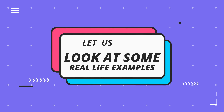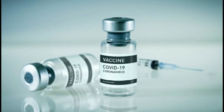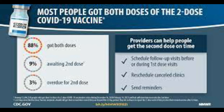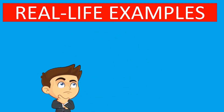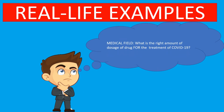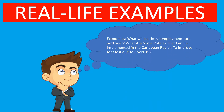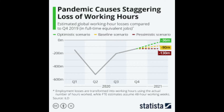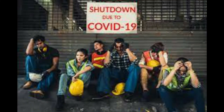Now let's give you some examples. In the medical field, many persons are concerned with what is the right dosage needed for treatment of COVID-19. There's a lot of planning that goes into coming up with two or three dosages — that's statistics right there. In economics, what will the unemployment rate be next year? What policies can be implemented in the Caribbean region to improve jobs lost due to COVID-19? We'd have to collect data and analyze it to see the trends — again, that's statistics.